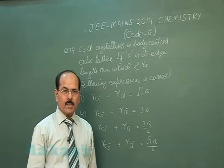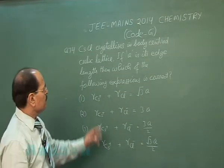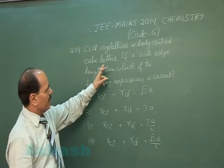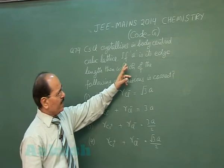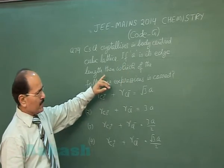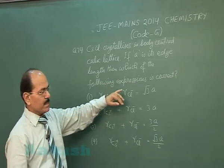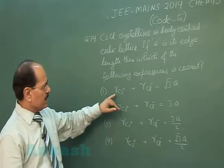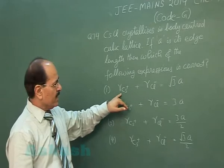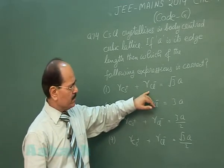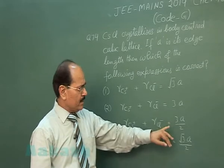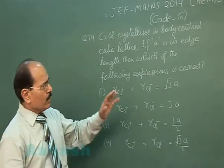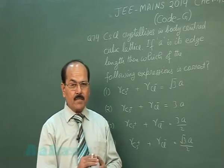Question number 74: Cesium chloride crystallizes in a body-centered cubic lattice. If A is its edge length, then which of the following expressions is correct for the sum of radii of the cesium and chloride ions? The four options are: √3A, 3A, 3A/2, or √3A/2.